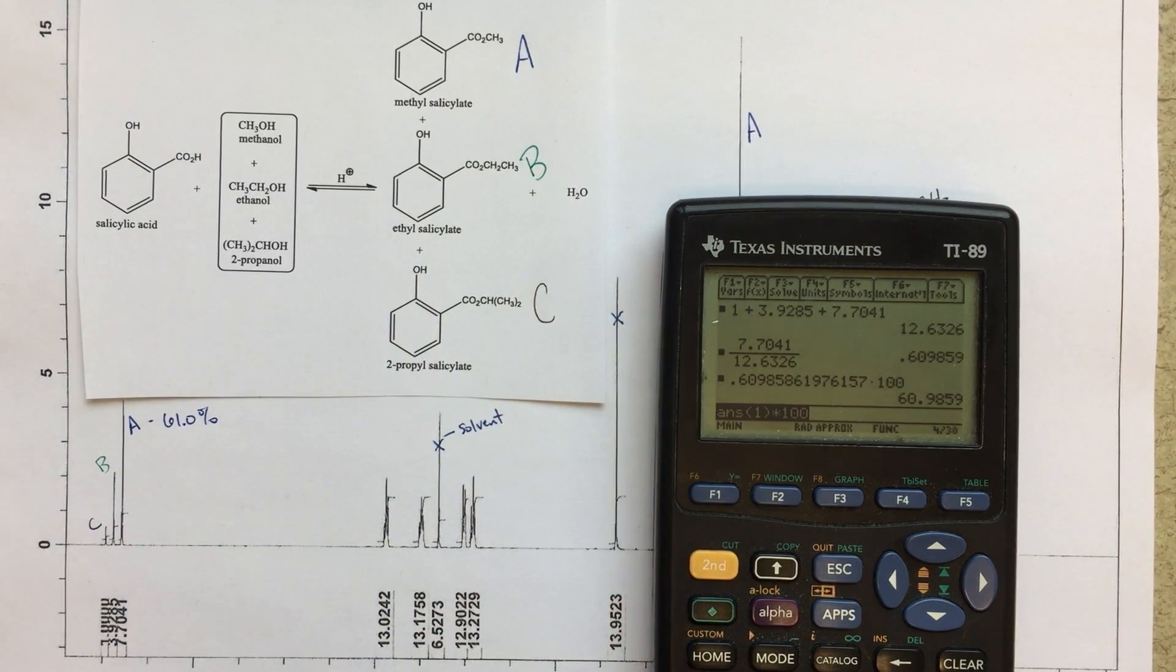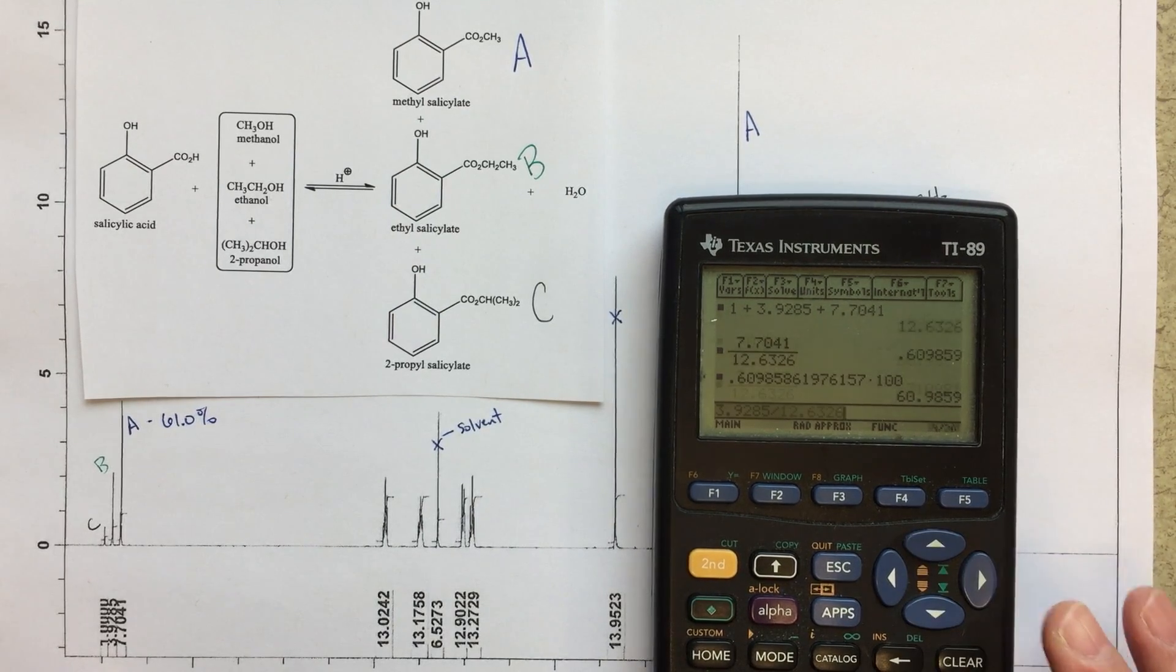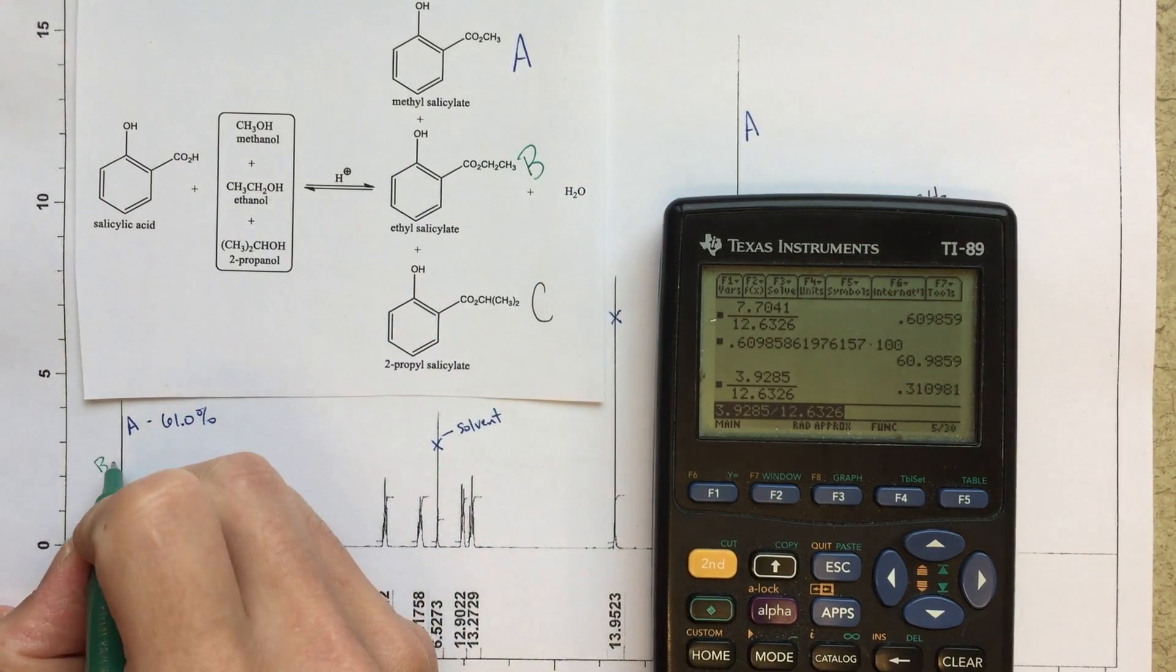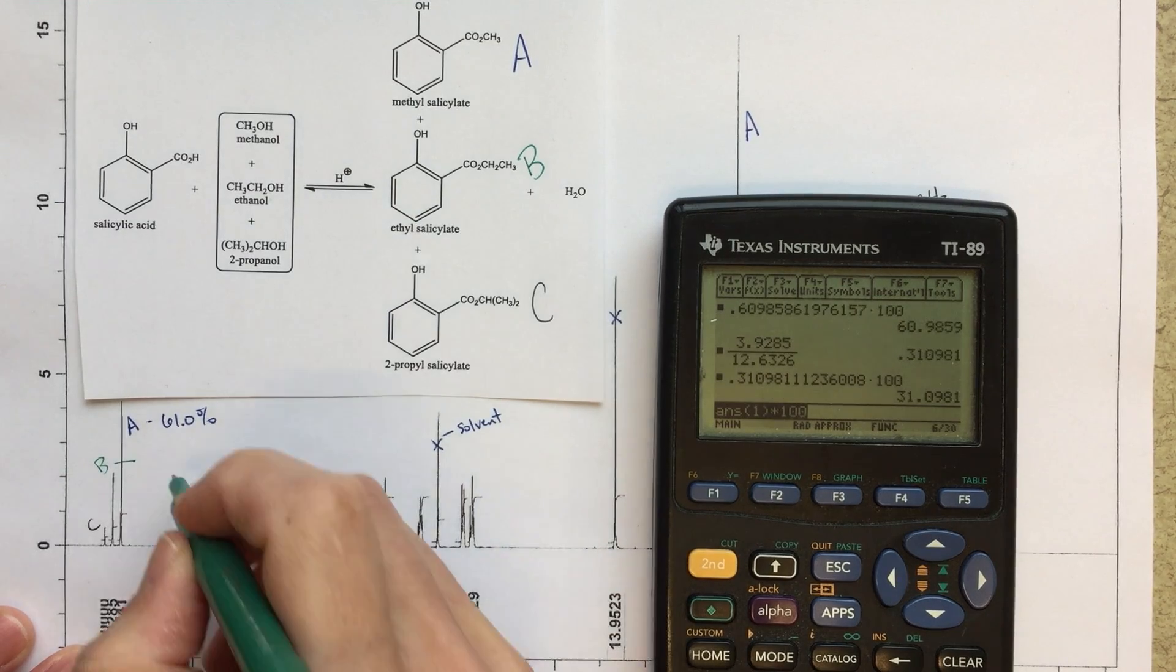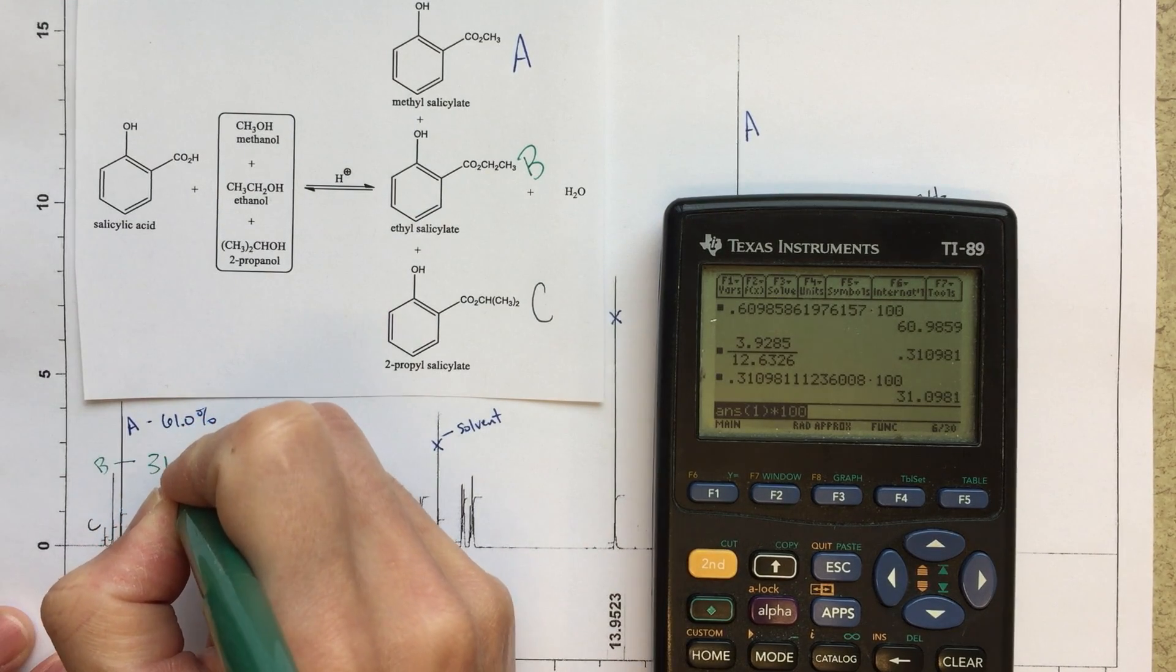And I'll do the same thing for B and C. So for B, 3.9285 divided by that total. So for B, that gives us, and multiply by 100 just to make it easy to visualize, 31.1%.